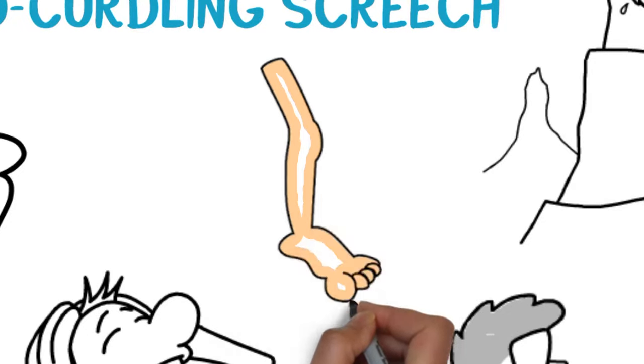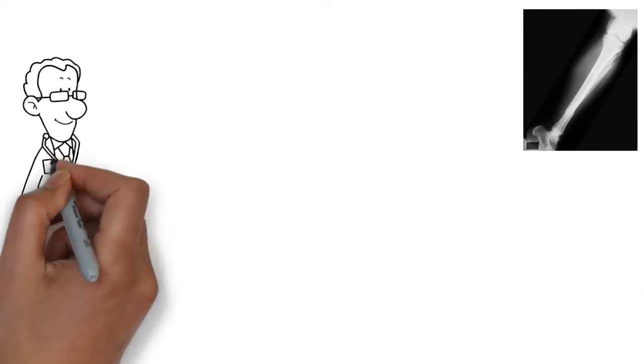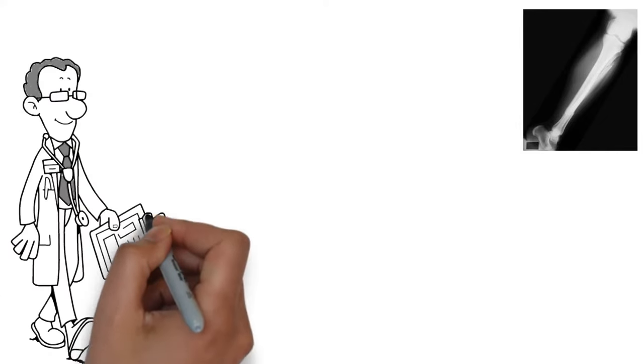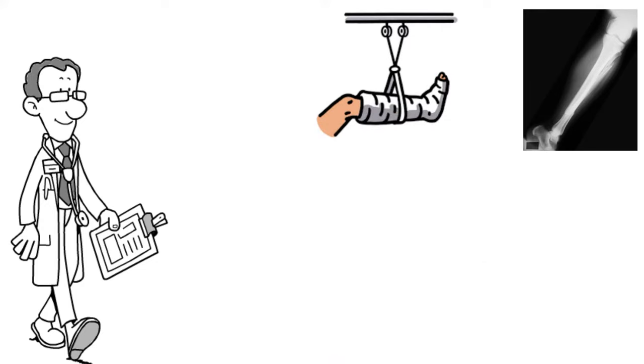The doctor can see that your leg is protruding at a funny angle and he moves it around to your agony and then performs an x-ray. Sure enough, the x-ray shows a broken bone. Finally, the doctor loads you up with some serious pain medication, realigns the bone, and puts on a lovely cast.